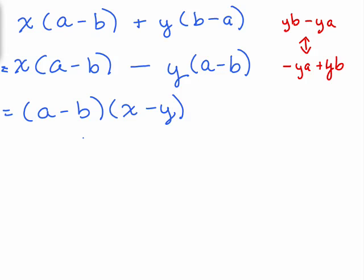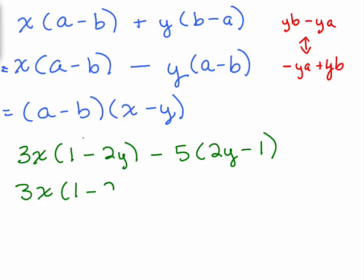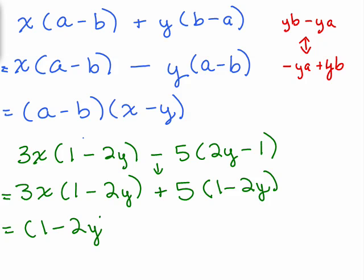Let's see if you could do one like that. Let's do 3x times 1 minus 2y minus 5 times 2y minus 1. This is similar but slightly different. Go ahead and try it. We've got 1 minus 2y and we have 2y minus 1. Those are opposites. Remember, this only works if there's a minus sign. I'm going to adjust the second one again. So I have 3x times 1 minus 2y, and if I'm going to change that to 1 minus 2y, I have to change this sign here to a plus.